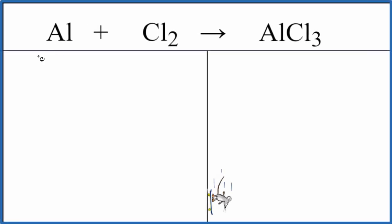When we balance this equation, we have aluminum, chlorine gas, and aluminum chloride. You'll notice right away that it's a little complicated because we have an odd number here and an even number here. So let's look at how we might deal with that.